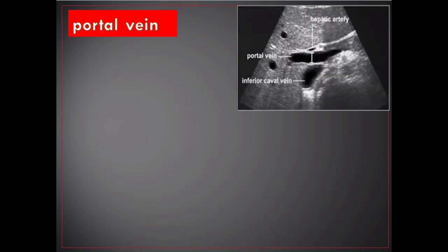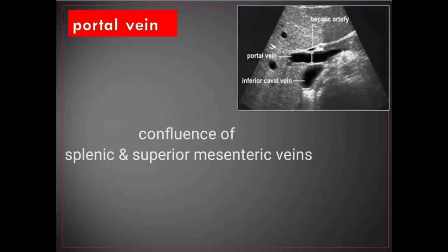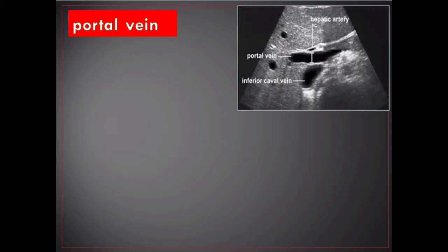Portal vein. The portal vein is the main vessel of the portal venous system, which drains blood from the gastrointestinal tract, gallbladder, pancreas, and spleen to the liver. It results from the confluence of the splenic and superior mesenteric veins and drains directly into the liver, contributing to approximately 75 percent of its blood flow. The hepatic artery provides the remaining hepatic blood flow. The portal vein is visualized in the longitudinal axis from the spleno-mesenteric junction to the liver hilum.